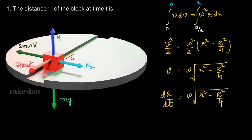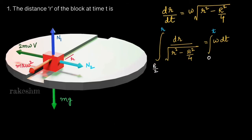Now we want to find r as a function of time. We write v as dr/dt, so dr/dt = ω·√(r² - R²/4). Taking r terms to one side and the time term to the other side, we get dr / √(r² - R²/4) = ω·dt. Next we will integrate this expression.